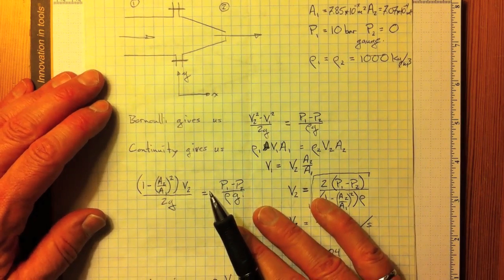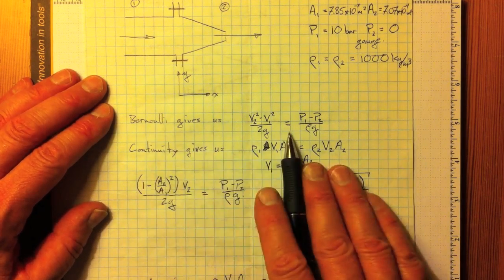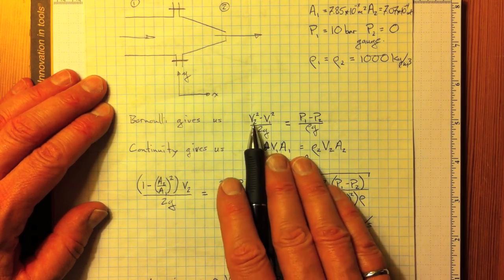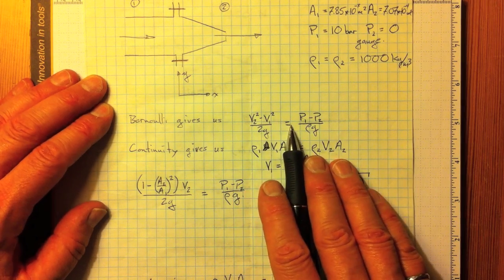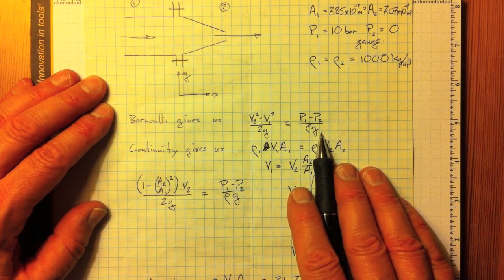So Bernoulli's equation, once we simplify, no elevation term, the differences in the velocity squared divided by 2g must be equal to the difference in the pressure divided by rho g.